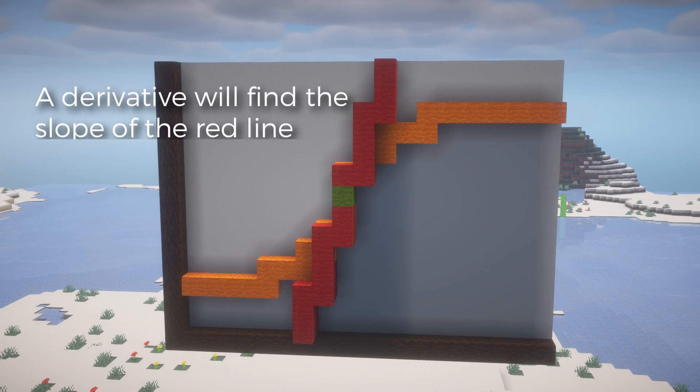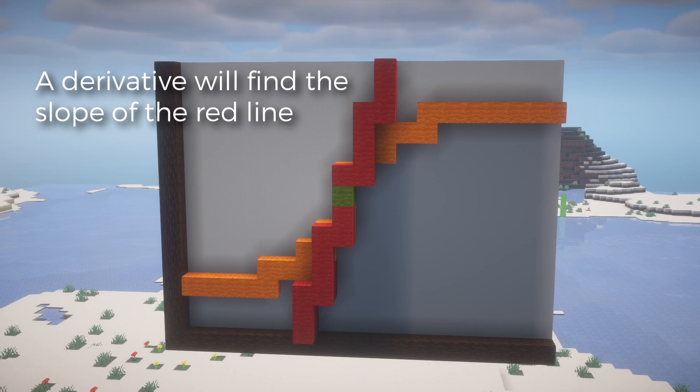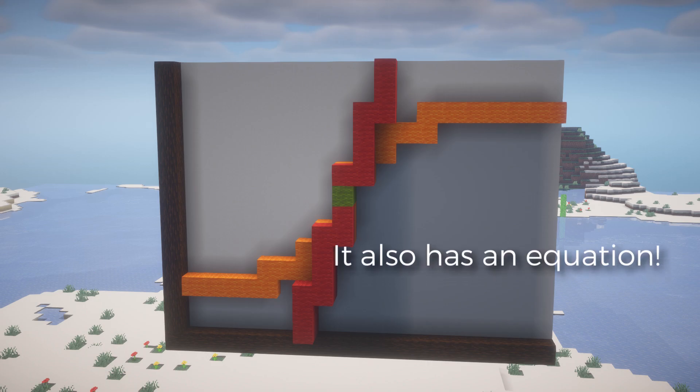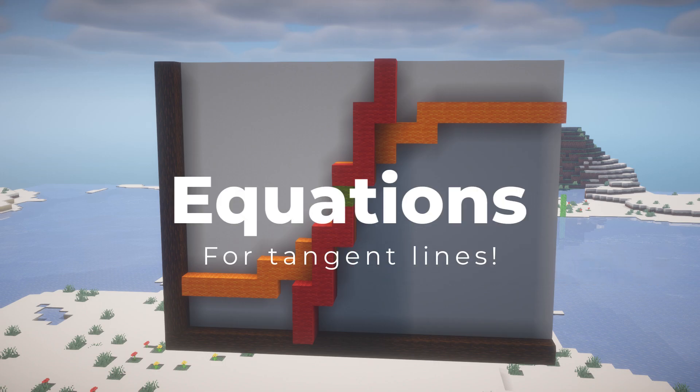As we went over in our derivative basics video, a derivative will find the tangent line's slope, or the slope at that point. Like any linear line, however, it too has an equation that many AB calculus or early calculus courses will ask for. And that's what we're here to go through today. Welcome to finding the equation for a tangent line.